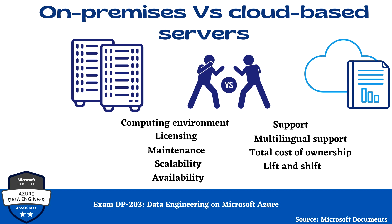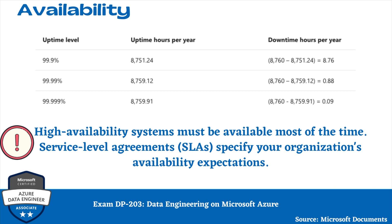Now we will talk about availability — meaning for how long a duration your server is up or down. There are different standards: out of 365 days, how many days the servers were up and what was the downtime. High availability systems must be available most of the time. Service level agreements, or SLAs, specify your organization's availability expectations. For on-premise services, the more uptime the SLA requires, the higher the cost. This is a very significant factor when deciding whether to go for on-premise or cloud solutions.